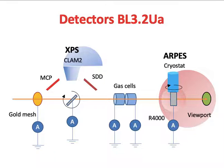We can also analyze the energy of electrons emitted from the sample using an Electron Energy Analyzer. We call this the XPS station; we have the CRAM2 Electron Energy Analyzer. The XPS station can also measure fluorescence yield for X-ray absorption spectra using MCP and a second drift detector.